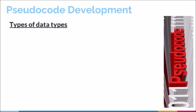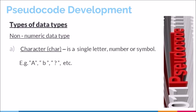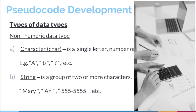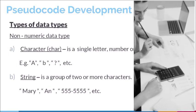The other classification is non-numeric data types. Non-numeric data types are related to text or character entries being accepted into a program. There are two specific non-numeric data types generally used in pseudocode: character and string. A character is a single letter, number, or symbol, while a string is a group of two or more characters combined. We normally specify characters and strings using double quotation marks. For example, a telephone number containing a hyphen cannot be used in calculations, so it is classified as a string.